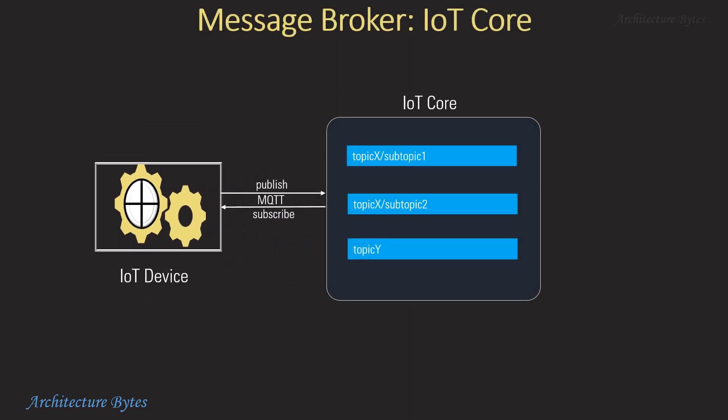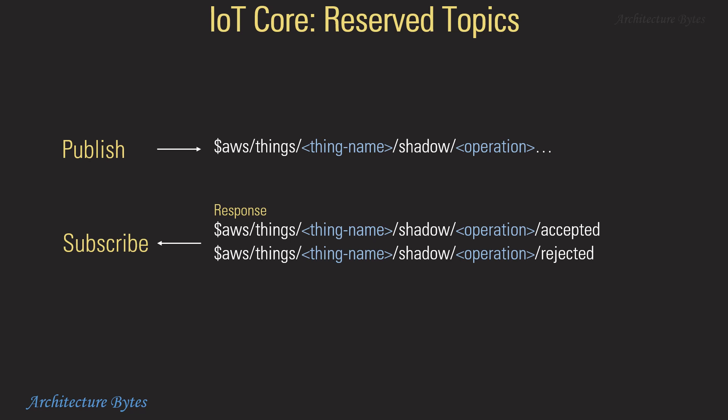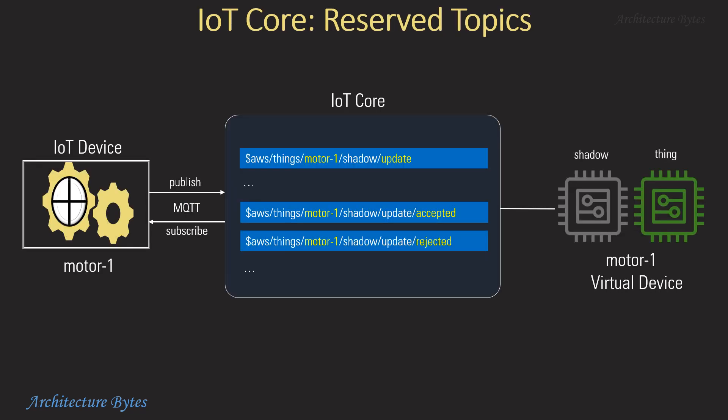IoT Core is a MQTT message broker. Client devices can send and receive messages to topics in it. You can use your own topic or one of the reserved topics. Reserved topics start with a dollar sign and have a Thing name as part of the topic name, and integrate automatically with the Thing shadow. So a message sent to the reserved update topic will change the state of the device in the corresponding Thing shadow and result in a success or failure message in an accepted or rejected subtopic. Anyone with necessary authority can send a message to the update subtopic and subscribe to response messages on accepted or rejected subtopics.